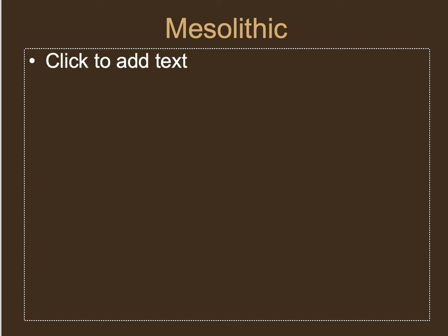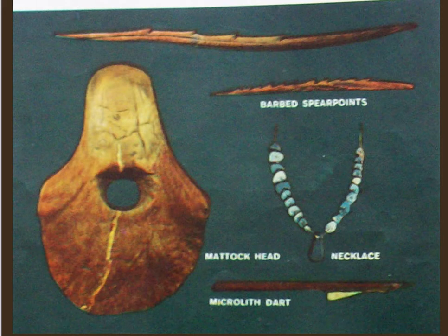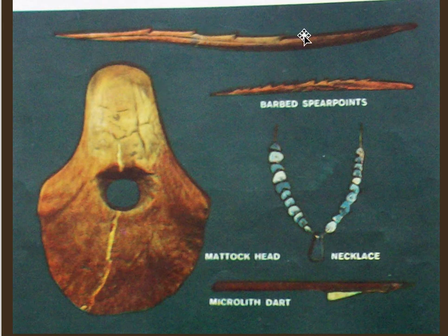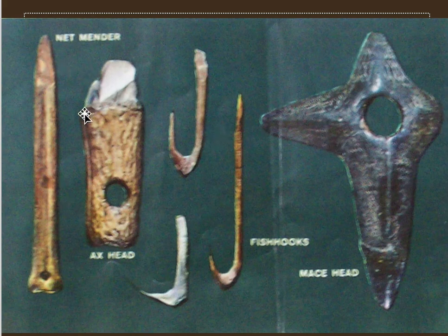We start to see diets change. There's no more megafauna — they're gone. The tools change as a result. At a Paleolithic site in Europe you'd see large spear points to hunt megafauna, but during the Mesolithic you have small barbed harpoon-like spears for fishing, things to repair and make nets, fish hooks, and tools to chop down trees. So it's a very different kind of lifestyle.